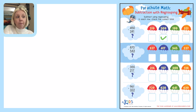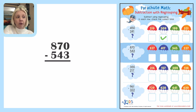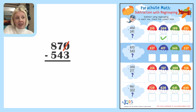Now I'm going to go to the next one. The next one is 870 minus 543. So once again in my ones place I need to take three from zero but I can't do that. I'm running into a problem, so I need to give this ten. I'm going to turn it into a ten, and the only way I can do that is by subtracting ten from the tens place side.